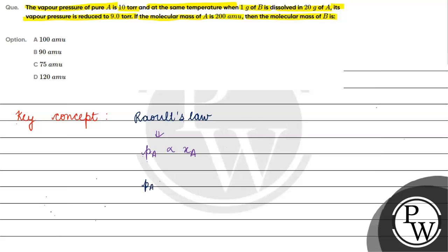Now, P is equal to P°_A into x_A. P°_A is basically the vapor pressure of pure A. Now, if we add a non-volatile solute to the solvent, the vapor pressure of the solvent is reduced compared to the vapor pressure of the pure solvent.